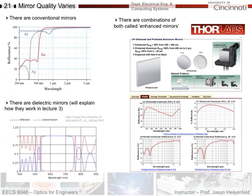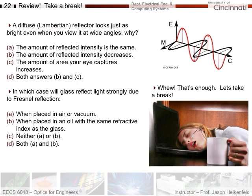Mirror quality varies and there are several types. In this lab we mainly use aluminum mirrors, which give pretty good reflection across wavelengths. There are also gold mirrors with high reflectivity but less in the blue, and silver mirrors. There are also fancy dielectric mirrors made of layers of glass with different refractive indices — we'll cover those in Lecture 3. They can achieve 100% reflection over a given wavelength range. Most mirrors in this lab combine aluminum with a dielectric coating to boost reflectivity.